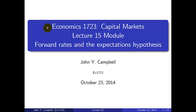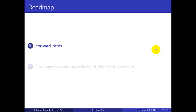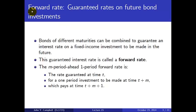Welcome to Economics 1723 Capital Markets. This is the online module for lecture 15. We're going to talk about forward rates and the expectations hypothesis of the term structure. A forward rate is a guaranteed interest rate on a bond investment to be made in the future. We set the rate today but pay no cash until later. This can be done through a financial contract, or by trading bonds of different maturities today. If you can go long and short, you can set up a trade with no cash outflow or inflow today that effectively guarantees an interest rate on a fixed income investment to be made in the future. That rate is called a forward rate.